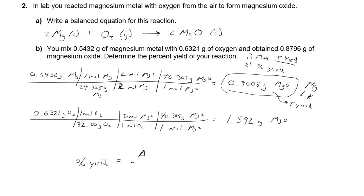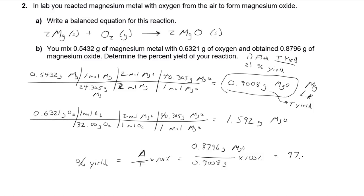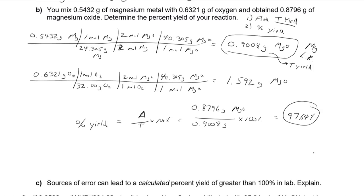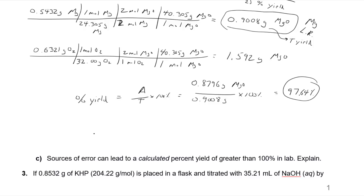Percent yield equals actual yield over theoretical yield times 100%. Plugging in: 0.8796 grams actual divided by 0.9008 grams theoretical, times 100%, gives approximately 97.64% yield. That's pretty good.